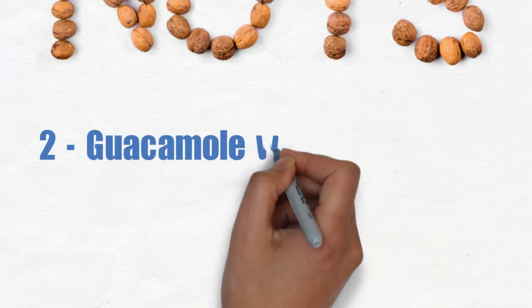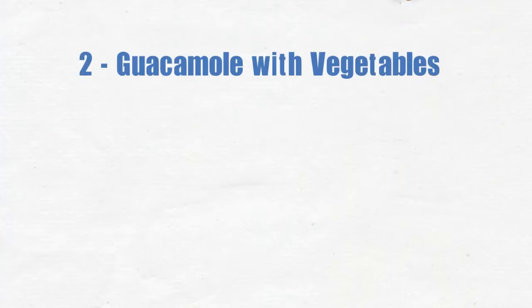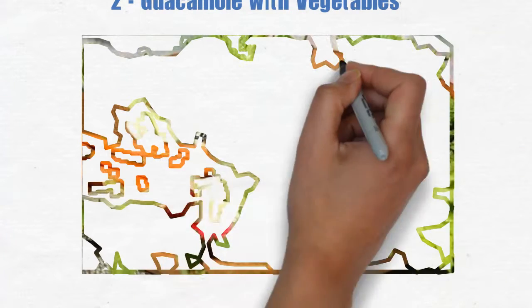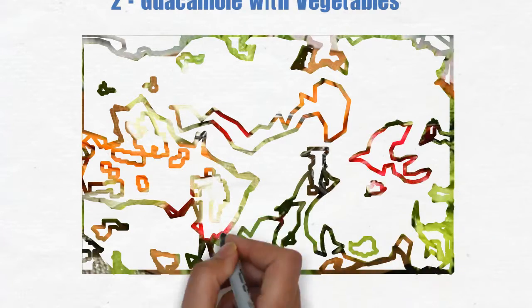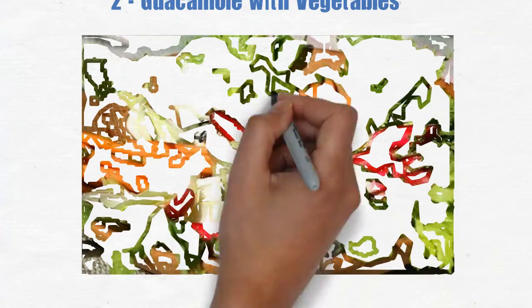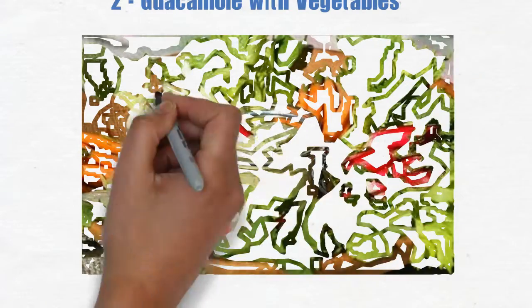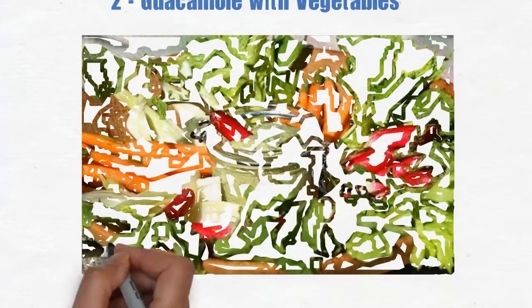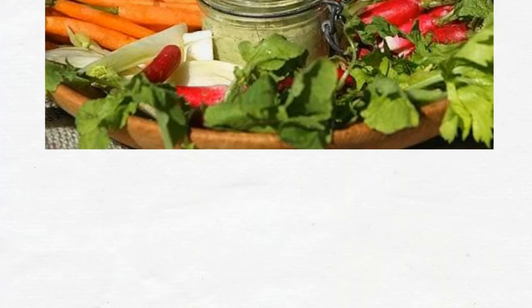2. Guacamole with vegetables. Veggies such as red peppers have really high levels of healthy antioxidants, carotenes, and other fat-fighting nutrients. The healthy fat in avocados pairs well with most vegetables and will make for a very filling meal.